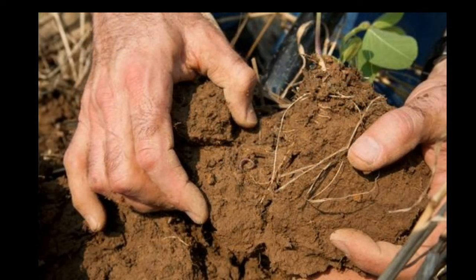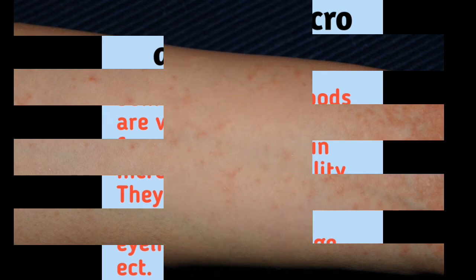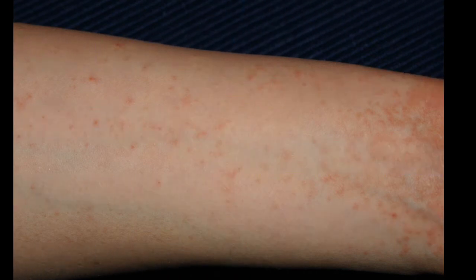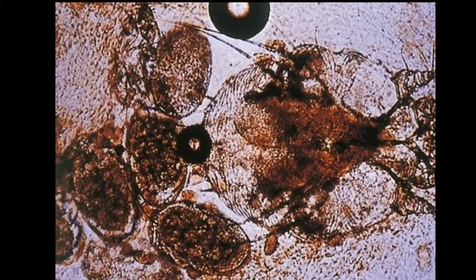Observing protozoa. Protozoa are present in water and also in soil. Observing micro-arthropods. Some micro-arthropods are very important for the soil as they help in increasing soil fertility. They may also be found on our skin, eyelids, beddings, and rugs. Some micro-arthropods cause diseases like scabies. They are not as small as bacteria but are of minor size and are joint-legged organisms.